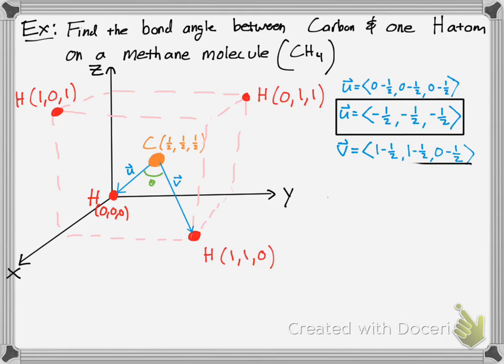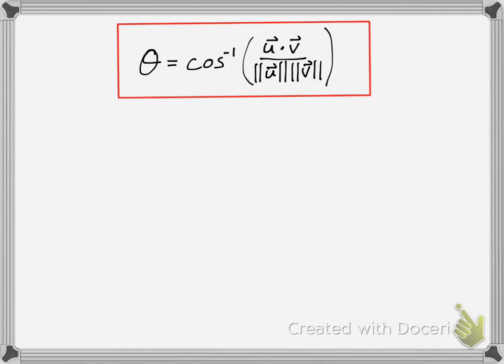And you need to do the hydrogen atom, 1 minus 1.5, 1 minus 1.5, and then 0 minus 1.5, to get your v vector. Now remember, we're using this formula here. We're trying to find that angle between the carbon and hydrogen molecule for that bond angle that is formed.